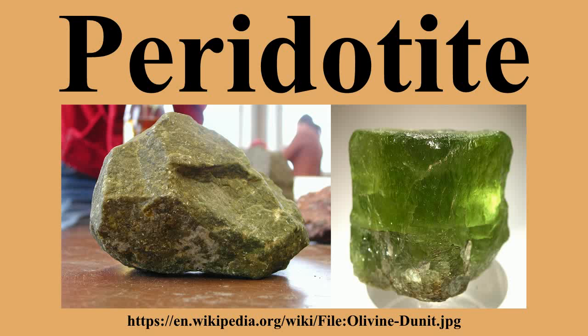Among the rocks that commonly include peridotite xenoliths are basalt and kimberlite. Certain volcanic rocks, sometimes called komatiites, are so rich in olivine and pyroxene that they also can be termed peridotite. Small pieces of peridotite have even been found in lunar breccias. The rocks of the peridotite family are uncommon at the surface and are highly unstable, because olivine reacts quickly with water. Many, if not most, surface outcrops have been at least partly altered to serpentinite, in which the pyroxenes and olivines are converted to green serpentine.